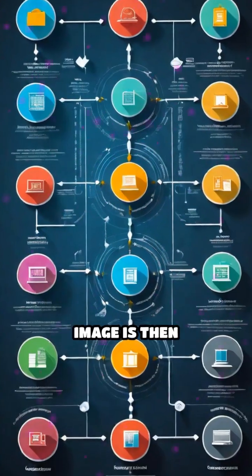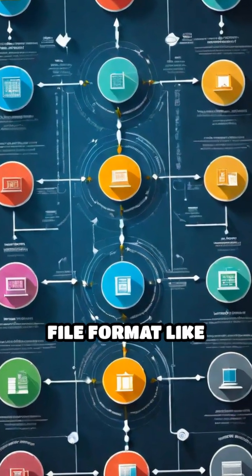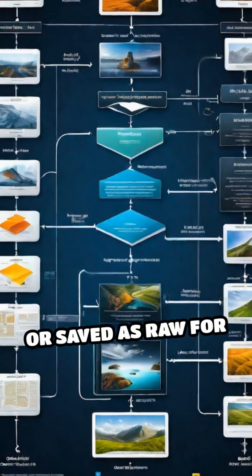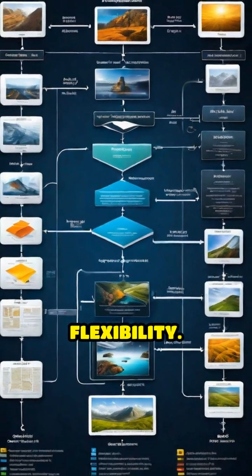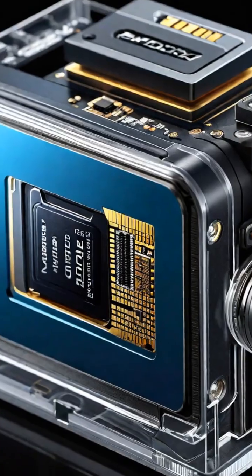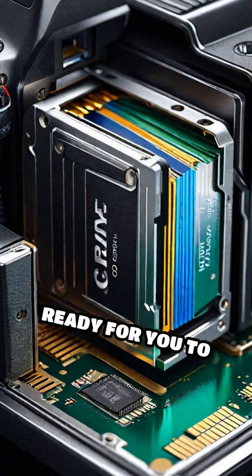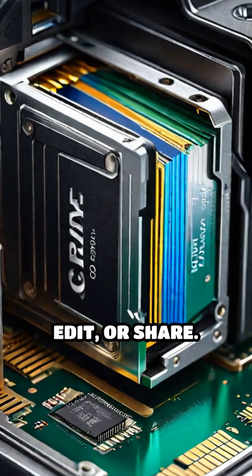The processed image is then compressed into a file format like JPEG or saved as RAW for more editing flexibility. Finally, this image is stored on the camera's memory card, ready for you to view, edit, or share.